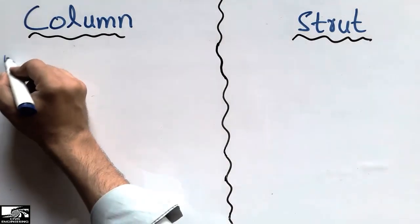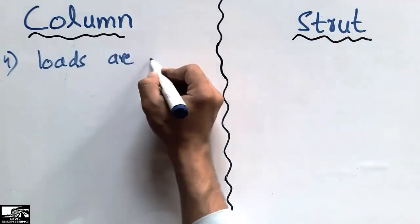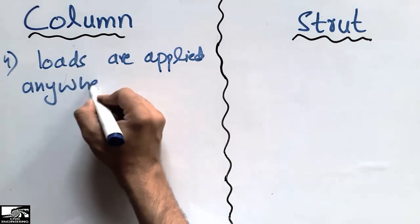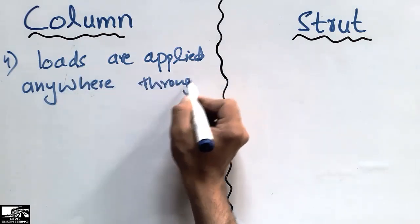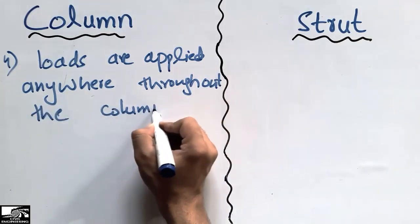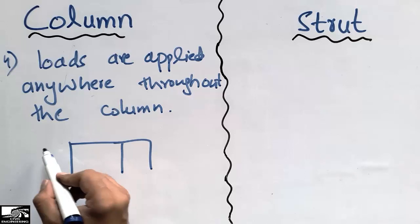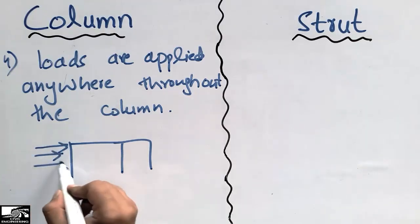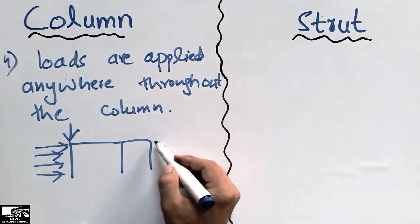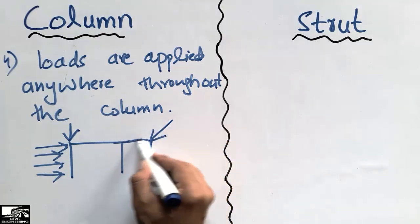The fourth difference is that for a column, the loads are applied anywhere throughout the column. For example, in a frame structure, loads may be applied as lateral loads, vertical loads, or sometimes inclined loads on the column member — the vertical member.